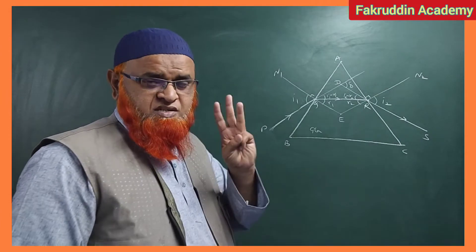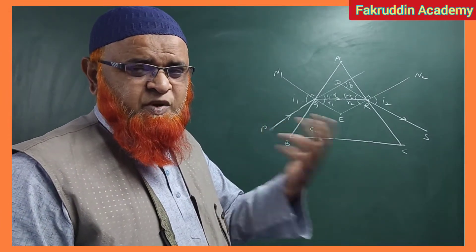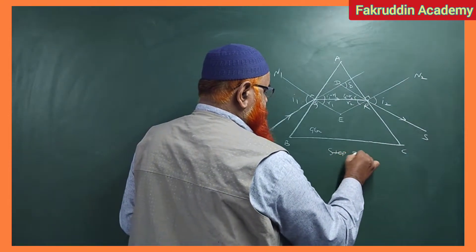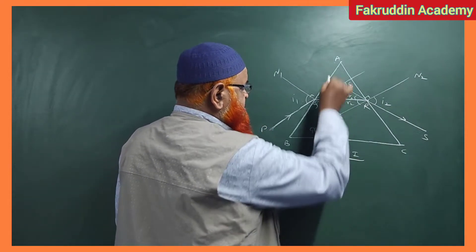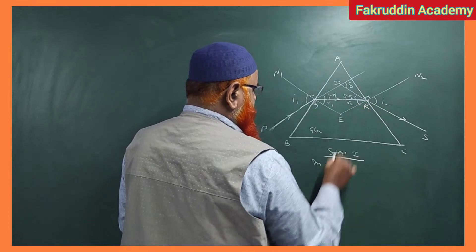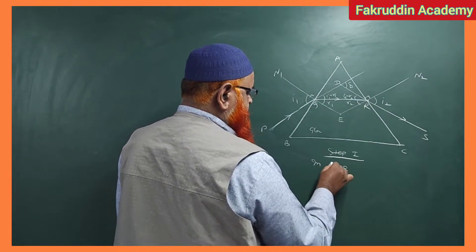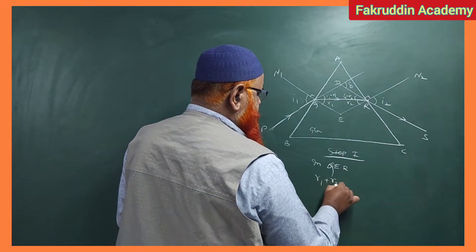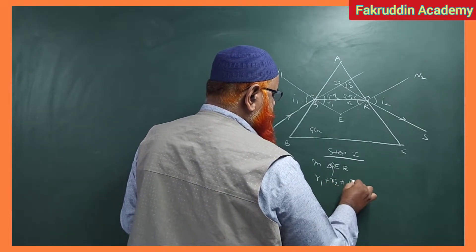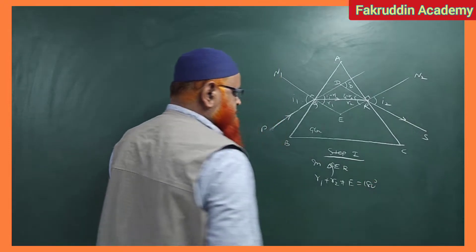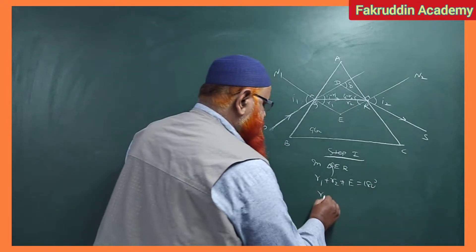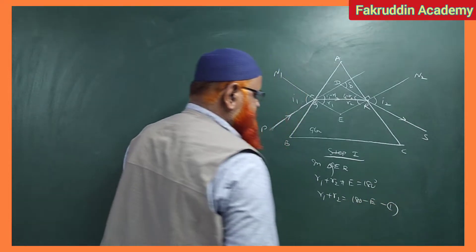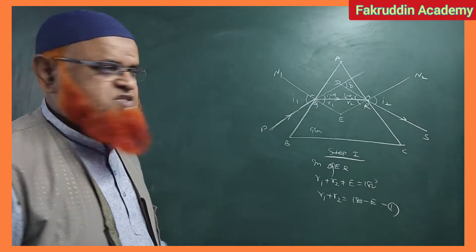Let us explain this concept in just 3 steps. Step 1: we will consider triangle QER. In triangle QER, you will find that R1 plus R2 plus E is equal to 180 degrees. So we can write R1 plus R2 is equal to 180 minus E. Let this be equation number 1.